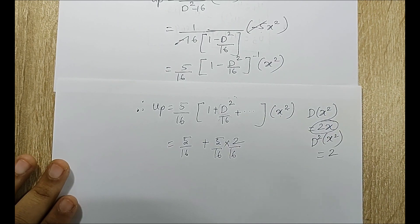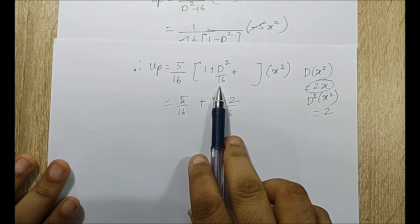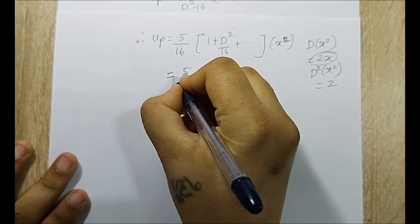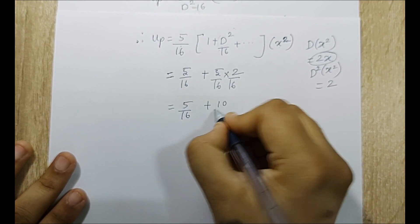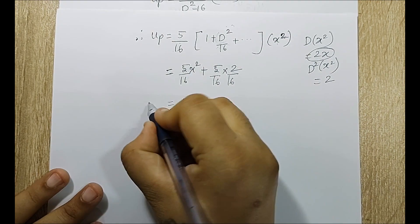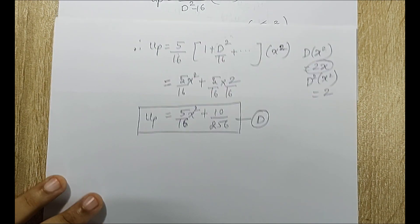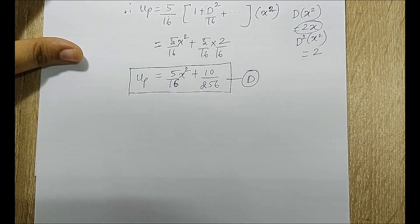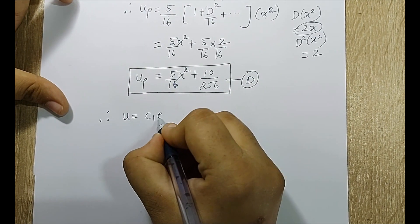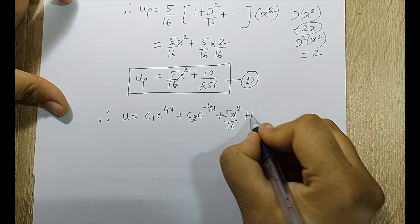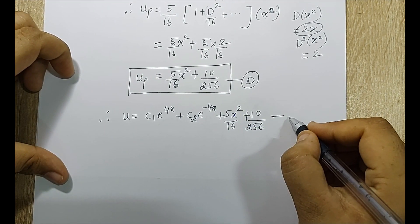The decision on how many terms to take depends on the power of x in the forcing term. Since this is x², two terms suffice; had it been x³ I would take one more. The particular integral becomes u_p = (5/16)·x² + 10/256. Combining with u_c gives the general solution: u = C₁·e^(4x) + C₂·e^(−4x) + 5x²/16 + 10/256. I mark this as equation E.